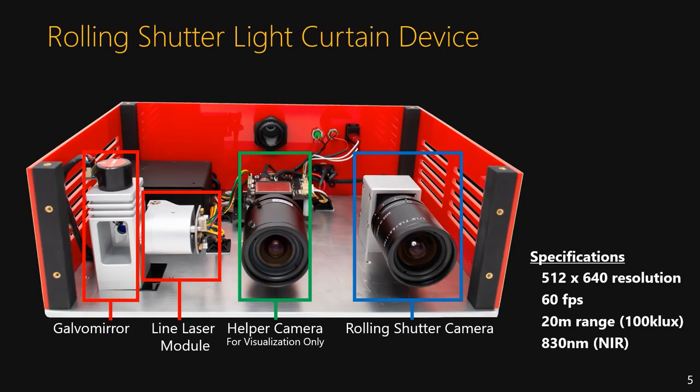This is our rolling shutter light curtain device. It is comprised of a galvomirror, line laser module, rolling shutter camera, and a helper camera. The line laser module projects a laser line onto the galvomirror, which then steers the light sheet onto the light curtain surface. This device uses a near-infrared laser and has an outdoor range of 20 meters in bright sunlight.